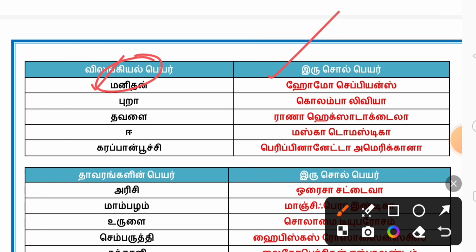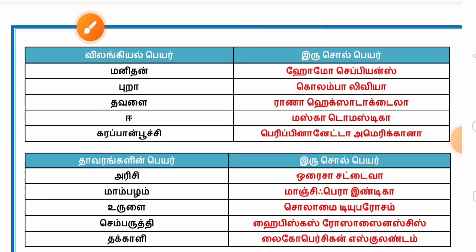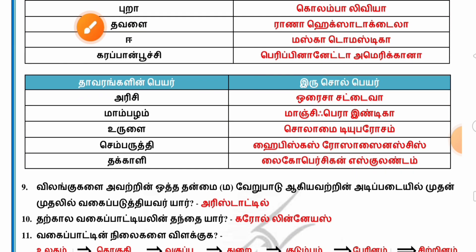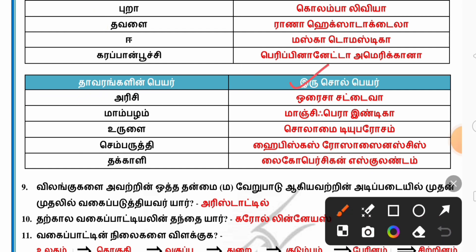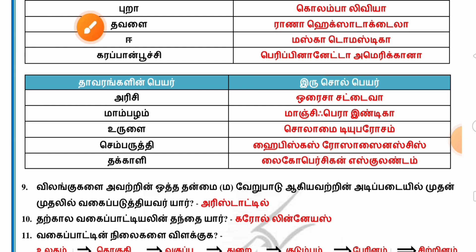Musca, Karapanmuchi, Peripnota Americana, Arisi, Mambalam, Manjifera, Urulai, Semperithi, Hibiscus Rosasinenses — these are the scientific names for various organisms and plants covered in this session.